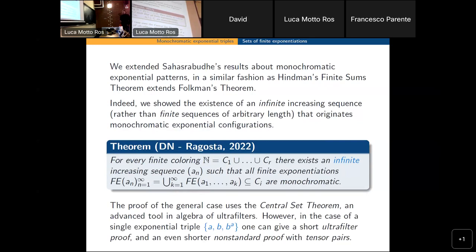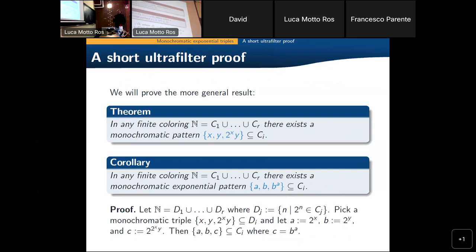As I mentioned, this is similar to the way Hindman's theorem generalizes Folkman's theorem. The proof of this general case uses the central set theorem, which is an advanced tool in the algebra of ultrafilters — central sets can be characterized as members of minimal idempotent ultrafilters. The proof takes some computations, but I want to stress here the fact that the original idea of dealing with these configurations using ultrafilters was suggested by a nonstandard viewpoint — with tensor pairs.